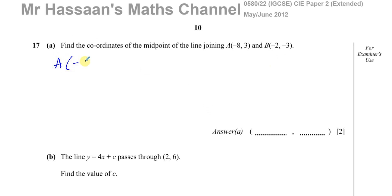So we have A with coordinates (-8, 3) and B with coordinates (-2, -3). Now the midpoint is basically the average of the x coordinates for the x coordinate of the midpoint and the average of the y coordinates for the y coordinate. So you add these two x values together: -8 + (-2) and divide by 2. That's the average of the x coordinates. The average of the y coordinates is 3 + (-3) divided by 2.